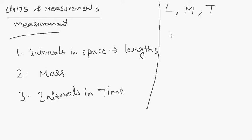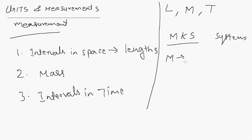The standard used by most scientists and engineers for measuring these fundamental quantities is called the MKS system. MKS stands for the initial letters of these quantities. M stands for meter, which is used to measure lengths.